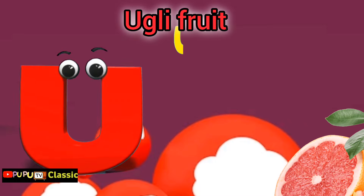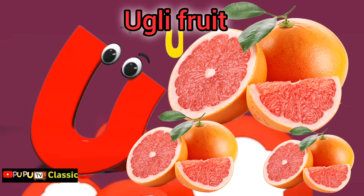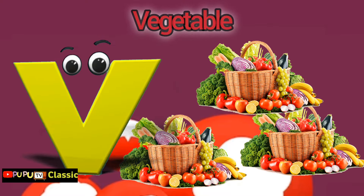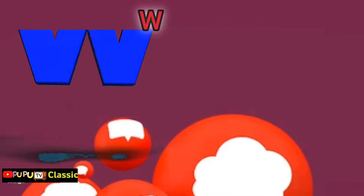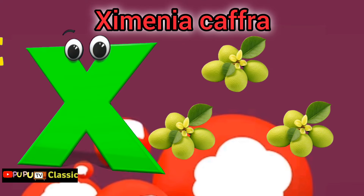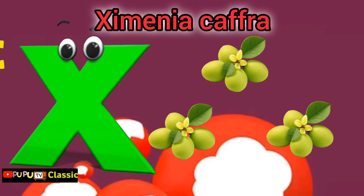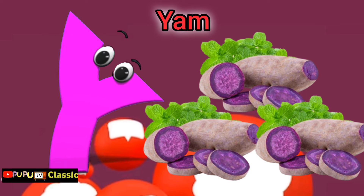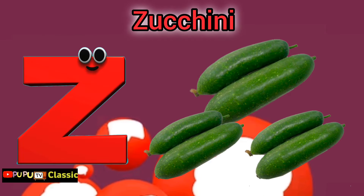U is for ugly fruit. V is for vegetables, vegetables. W is for witloaf, witloaf. X is for ximenia, ximenia. Y is for yam, yam. Z is for zucchini, zucchini.